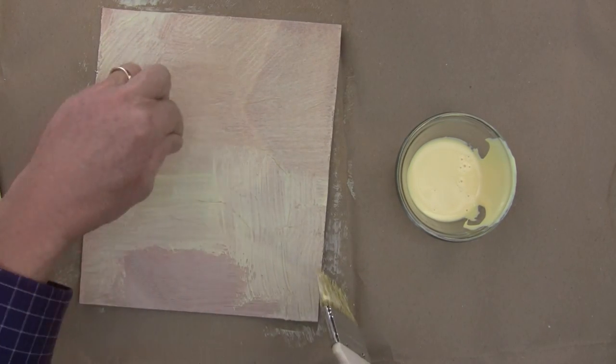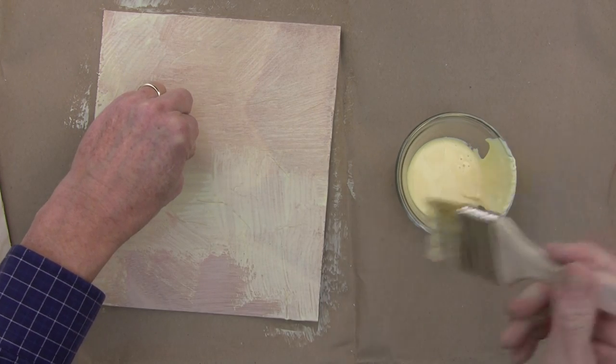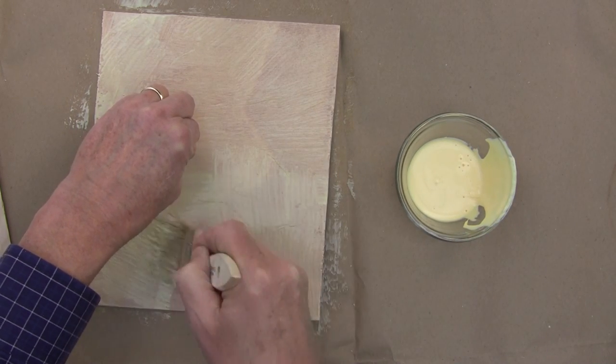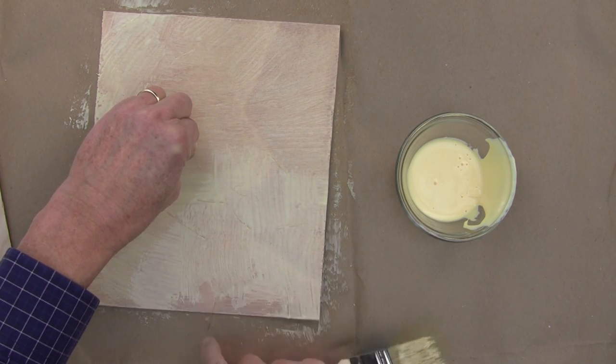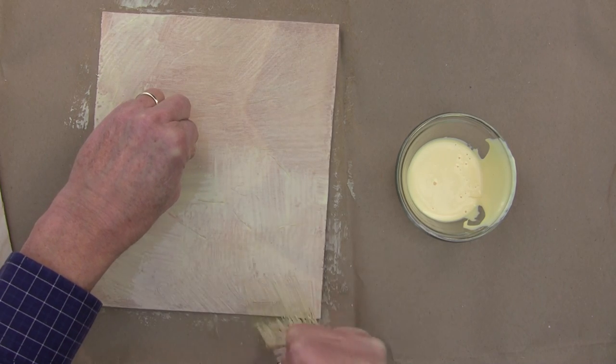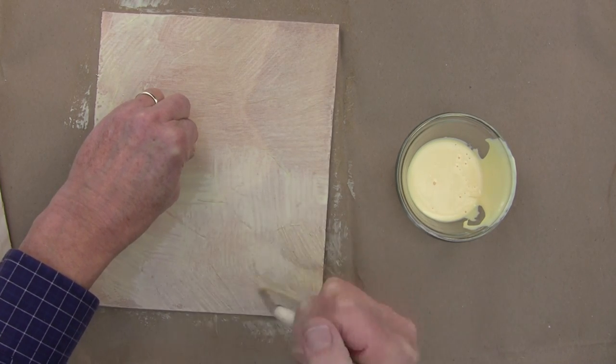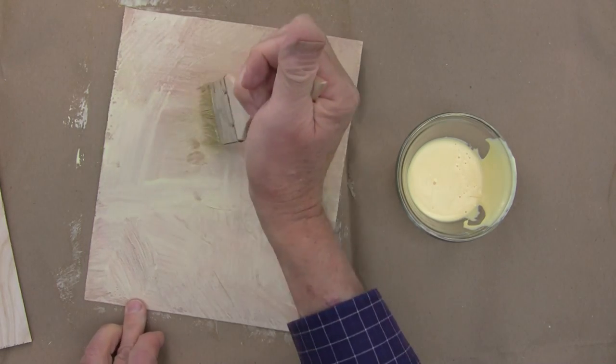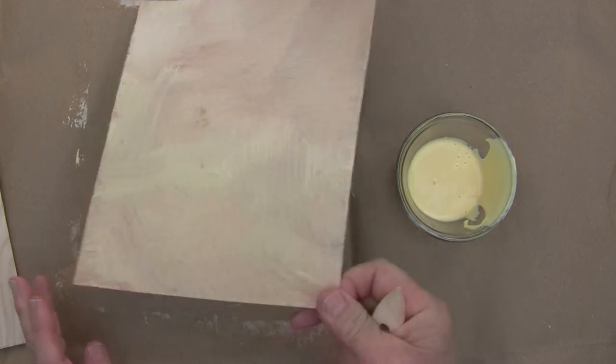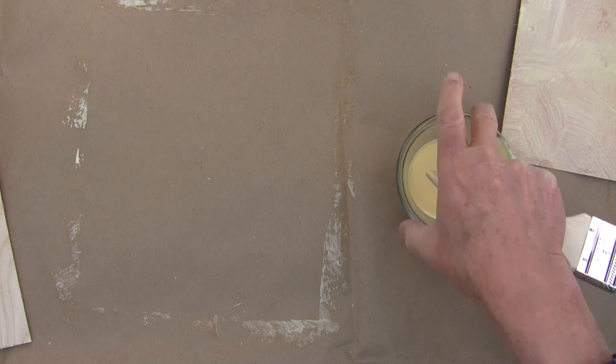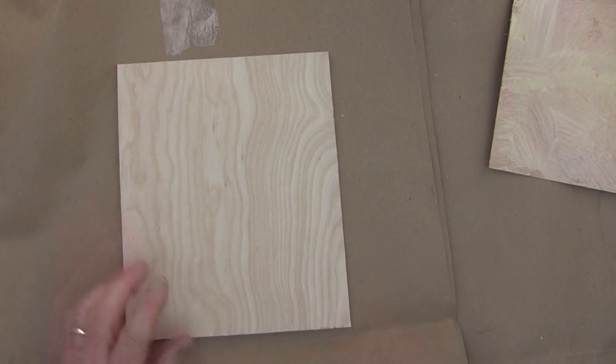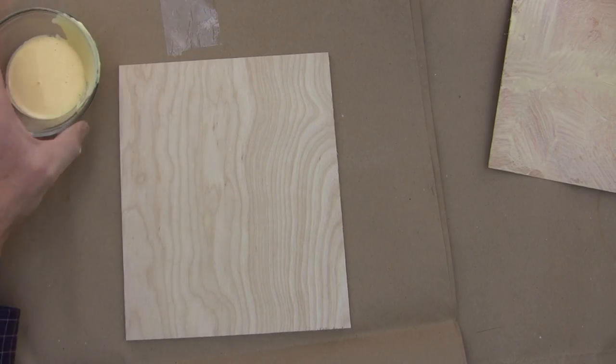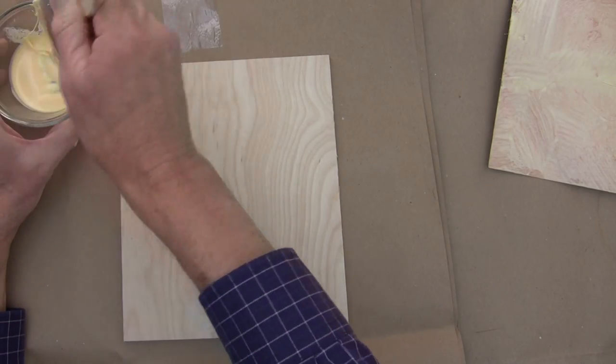Now, one of the tricks about gluing a veneer is that you want to get enough glue, but you don't want to get too much glue. So what does that mean? Well, I'm not sure what it means. What it means is, use your common sense. Enough glue, but not too much glue.